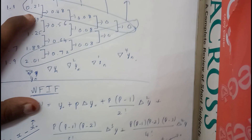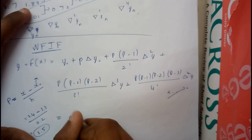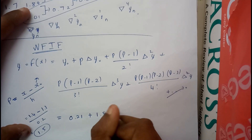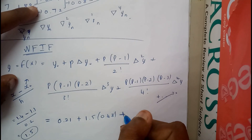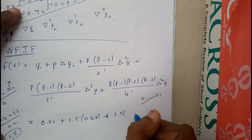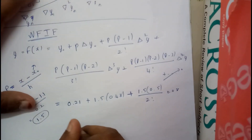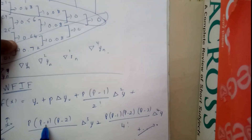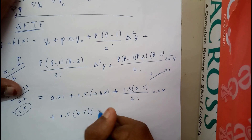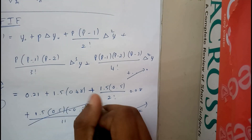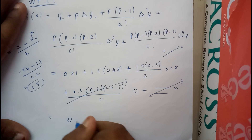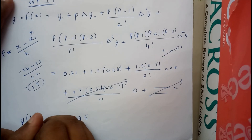Substituting all values: y₀ = 0.21, p = 1.5, Δy = 0.48, Δ²y = 0.08, Δ³y = 0, Δ⁴y = 0. So: y = 0.21 + 1.5×0.48 + (1.5×0.5)/2! × 0.08 + (1.5×0.5×(-0.5))/3! × 0 + ... The last two terms are zero, and after solving we get y(1.4) = 0.96.